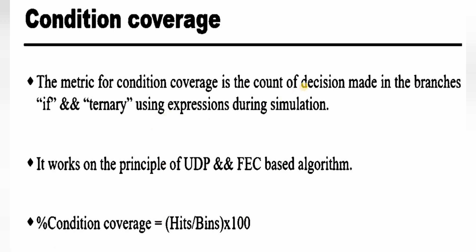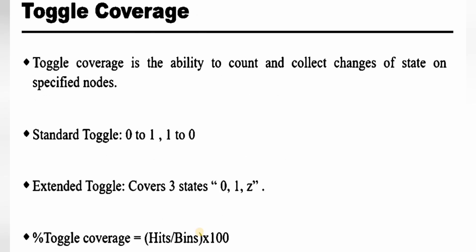Condition coverage is a metric counting the decisions made in branches — if and ternary — using expressions during simulation of a particular testbench. It works on the principle of UDP and RPC based algorithms. The formula remains the same: (hits / bins) × 100.